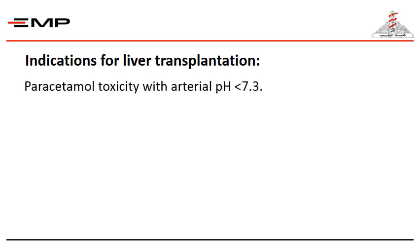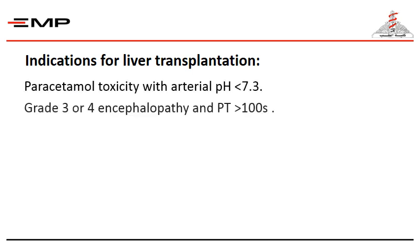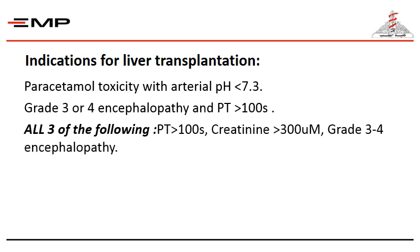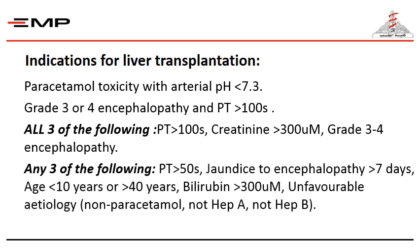Indications for liver transplantation include: paracetamol toxicity with arterial blood pH less than 7.3; grade 3 or 4 encephalopathy with prothrombin time more than 100 seconds; or all three of prothrombin time more than 100 seconds, creatinine more than 300 micromoles, and grade 3 to 4 encephalopathy. Additionally, any three of: prothrombin time more than 50 seconds, jaundice to encephalopathy interval more than 7 days, age less than 10 or more than 40 years, bilirubin more than 300 micromoles, or unfavorable etiology such as non-paracetamol, non-hepatitis A, non-hepatitis B.